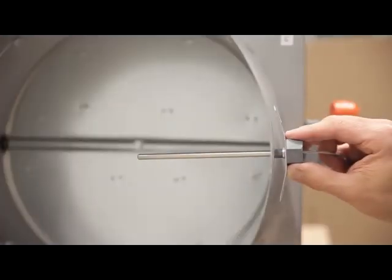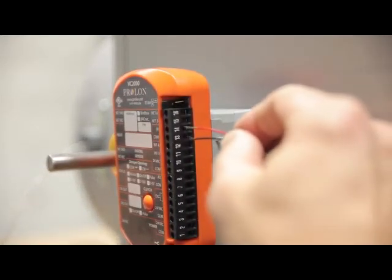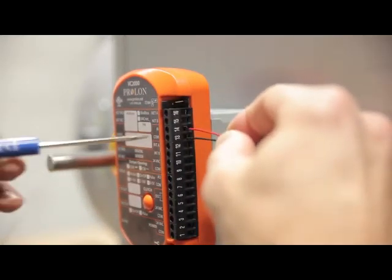Install the duct temperature sensor at the box's inlet. Now wire the duct sensor to the analog input on terminals 13 and 14.